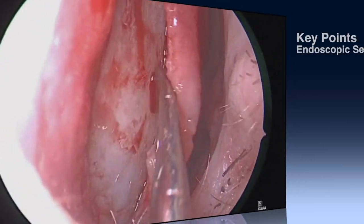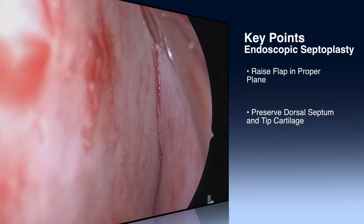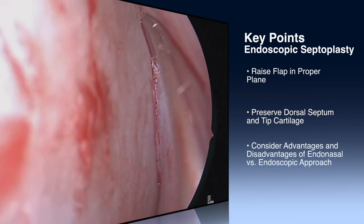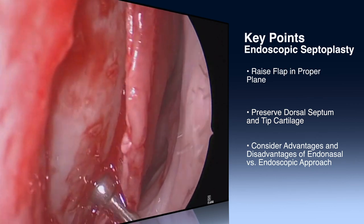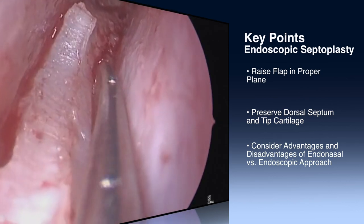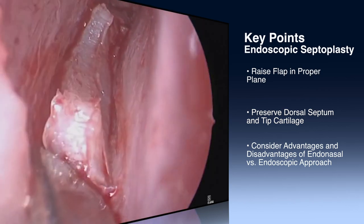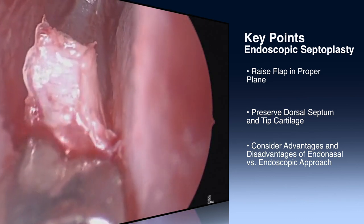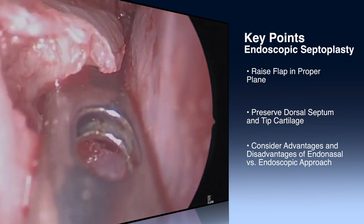In summary, with an endoscopic septoplasty, the most important key initial step is establishing your submucoperichondrial plane and raising your flap in that plane. It's of course imperative that you maintain adequate caudal and dorsal support for the patient's nasal tip. Lastly, there are significant differences between doing an endoscopic septoplasty and an open or endonasal septoplasty with a speculum, and careful consideration should be given to both approaches when selecting the right approach for a given patient.